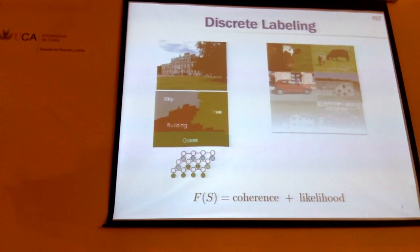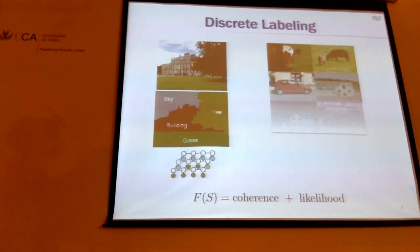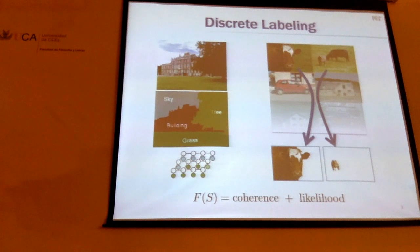We have this segmentation problem where essentially we're picking a set of pixels that take the same label. There are of course constraints here — for example, pixels that are close to each other most likely have the same label. So we have some kind of spatial coherence and the labels have to agree with what we actually see. Similarly, there's the problem of co-segmentation, where given a bunch of images I'm trying to figure out what is the object common in these images — picking a set of locations, one in each image, that are somehow similar. So that would also be a subset selection problem.